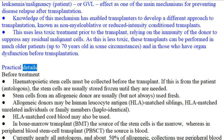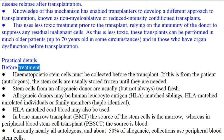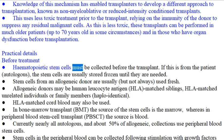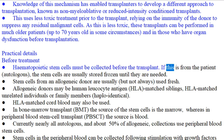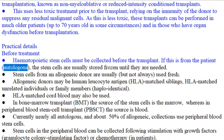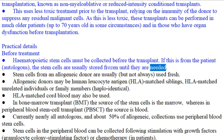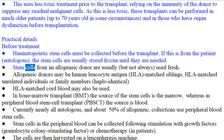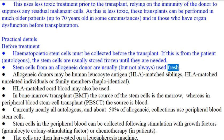Practical details before treatment: Hematopoietic stem cells must be collected before the transplant. If this is from the patient (autologous), the stem cells are usually stored frozen until they are needed. Stem cells from an allogeneic donor are usually, but not always, used fresh.